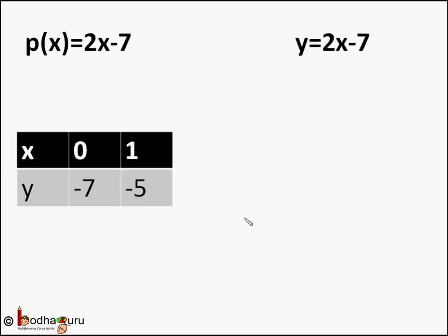Let's take a simple linear polynomial first, say 2x - 7. This has the maximum exponent of x equal to 1, so it's a linear polynomial. We can represent it as y = 2x - 7, this way it's in the form y = ax + b.